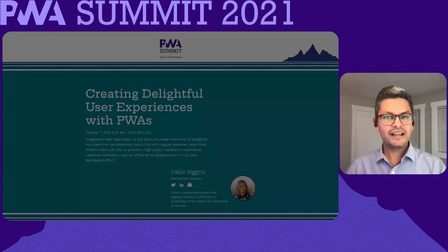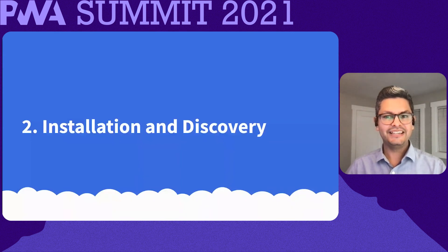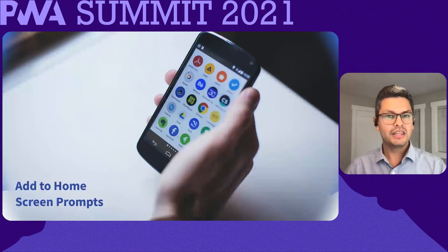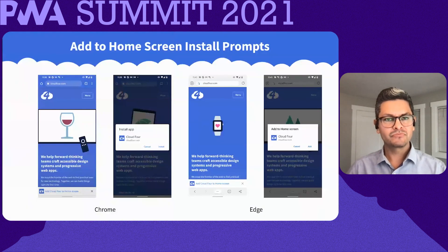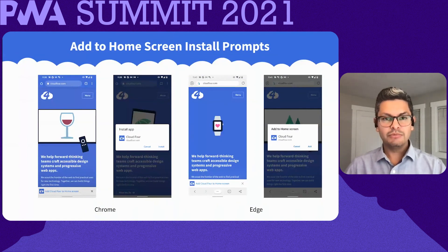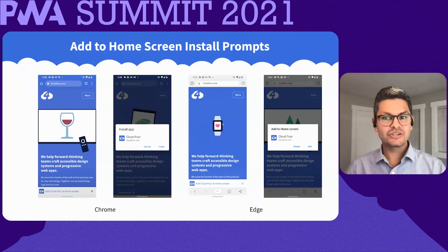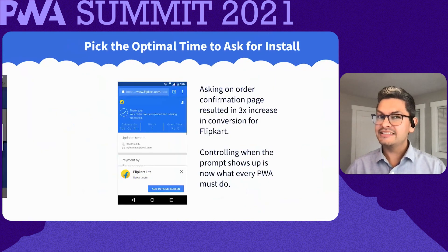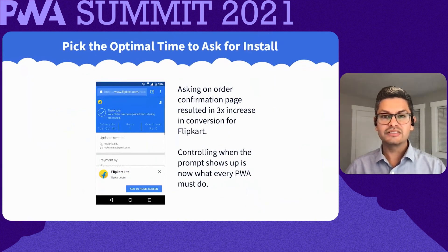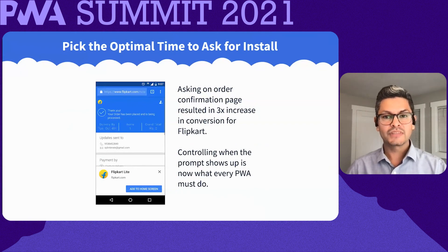The second factor in your PWA plan is installation and discovery. The first thing you should concern yourself with is the add to home screen install prompt. For some browsers, you don't have to do much other than meet a minimum PWA criteria and the browser will ask users if they want to install your app. That criteria may change over time, but even if it stays the same, you should still consider suppressing the prompt until you are fairly certain a user is likely to say yes. Doing so can greatly increase your conversion rate.